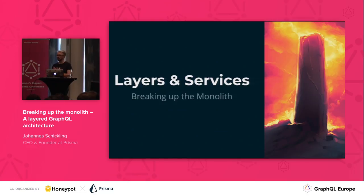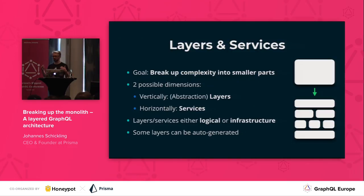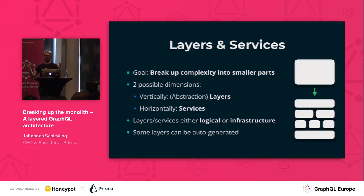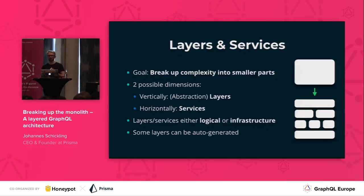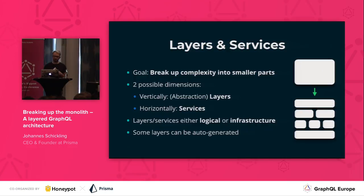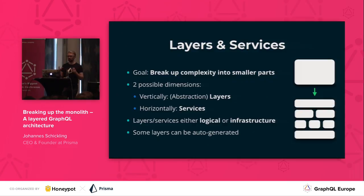So let's take a look at how we can break up that monolith — how we can break up that complexity into layers and services. Why layers and services? These are basically the two dimensions we can break it up in: horizontally across domain boundaries into various services, and vertically into abstraction layers. Each layer and each service can either be part of a bigger infrastructure unit, or can sometimes be deployed as a standalone infrastructure component. And what's most interesting is that as you think in services and layers, some of these layers can even be auto-generated based on adjacent layers.